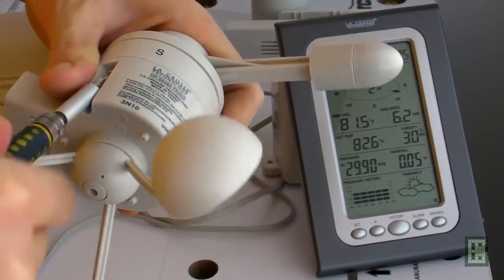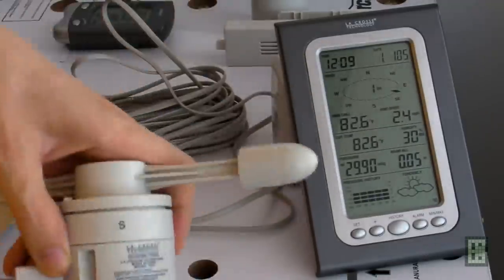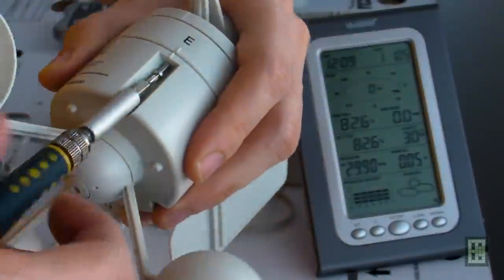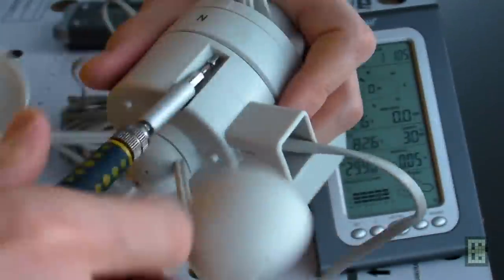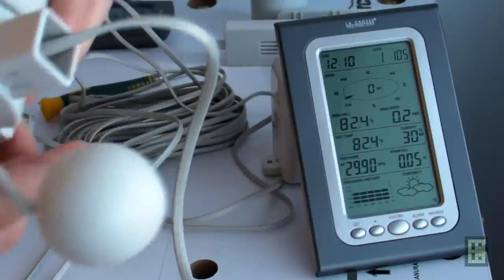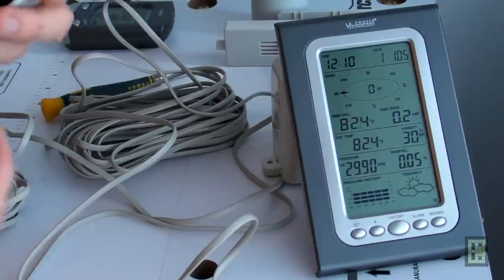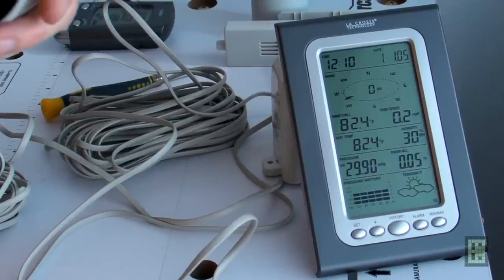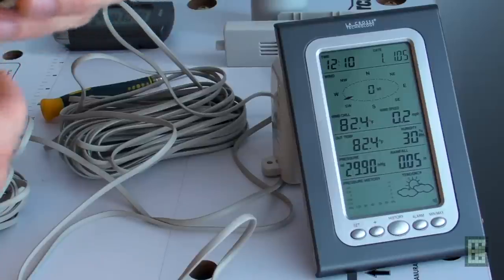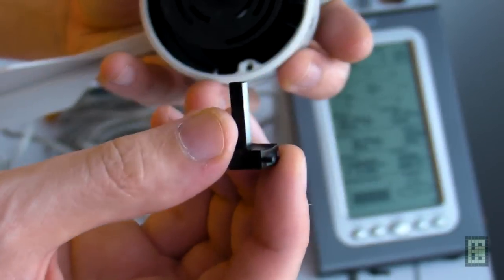I will now disassemble the wind speed and direction sensor. There are three screws keeping all this together. Nothing happened, it's just a piece of plastic that fell off the sensor.